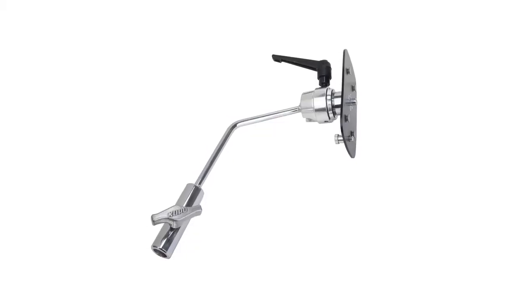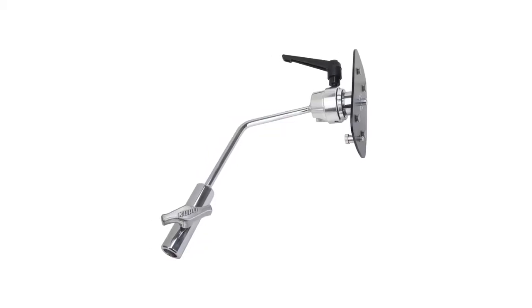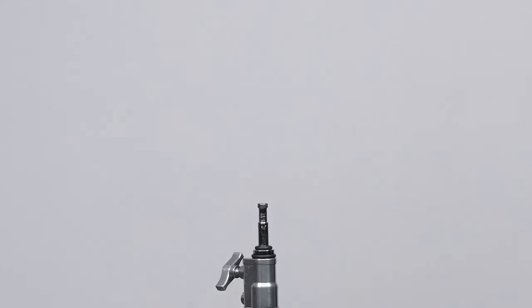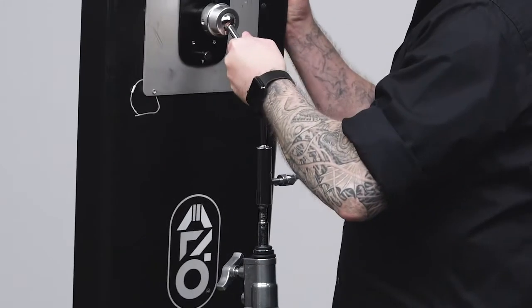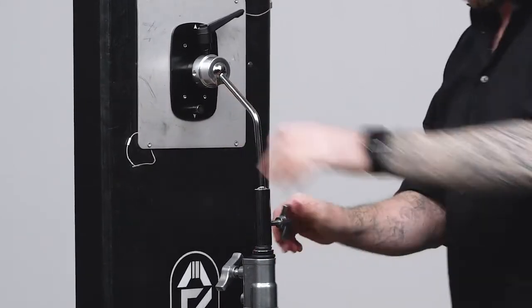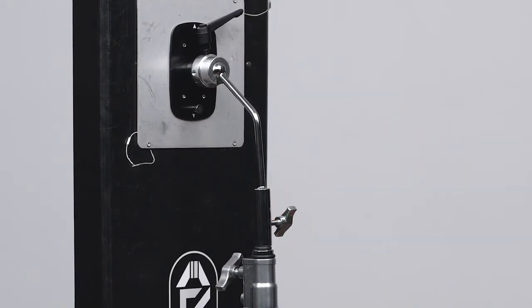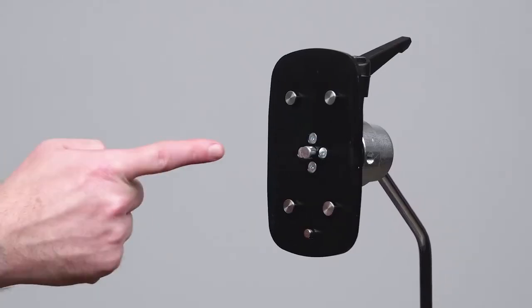These adapters, commonly referred to as 41K mounts, allow you to quickly mount your Kino Flow single, double, four bank, and bar fly fixtures to a 5 1⁄8 inch baby pin.